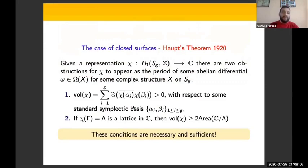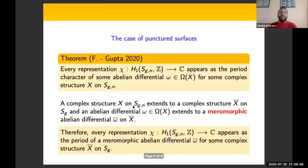So what happens for punctured surfaces? What we have shown with Shubhajai is that every representation χ appears as the period character for some abelian differential ω with respect to some complex structure X. So the picture is changed completely because now there are no obstructions.